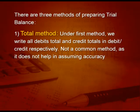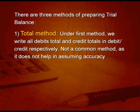Under the first method — the total method — we write all the debits total and all the credits total in the debit and credit columns respectively. This is not a common method as it does not help in assessing the accuracy of the trial balance.